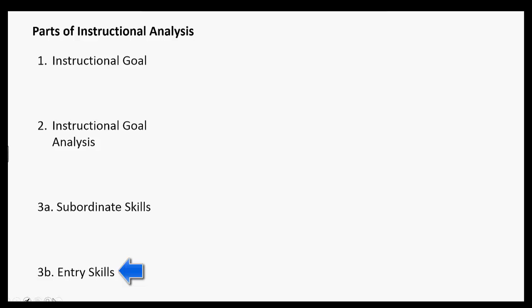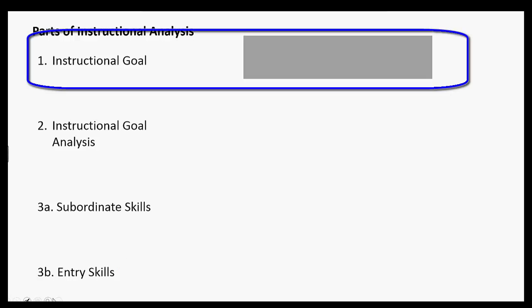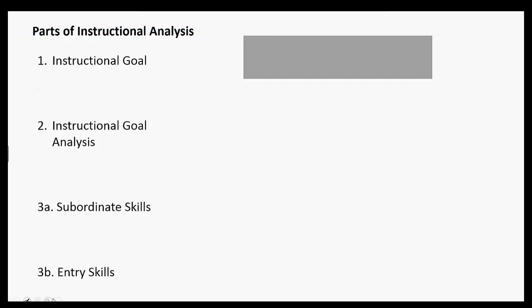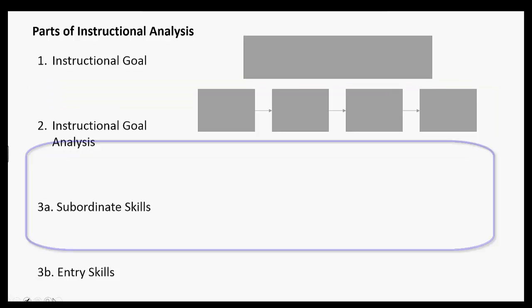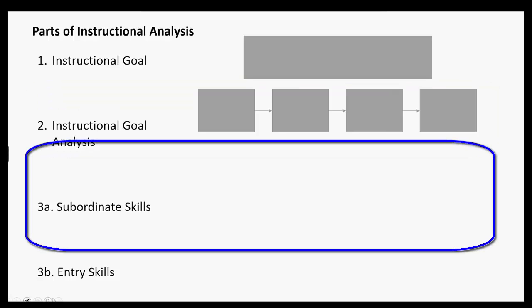Let's look at how this will be visually displayed. At the top of your layout you'll have your instructional goal, usually placed inside a box. You break down your goal with your instructional goal analysis, representing each step visually with boxes going across. For each of those goals you may have subordinate skills that the learner needs to learn to be able to do those steps.